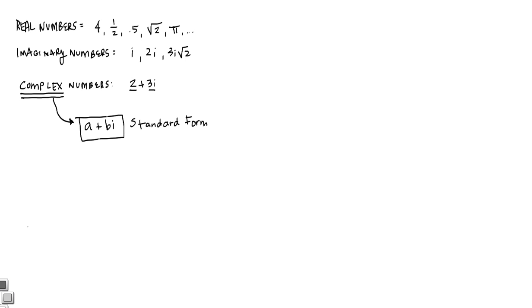Those complex numbers, I'm going to go ahead and write it up here bigger, have two parts. Those two parts are this part here, the a part, which is your real number portion, and your bi portion, which is your imaginary, your pure imaginary portion.